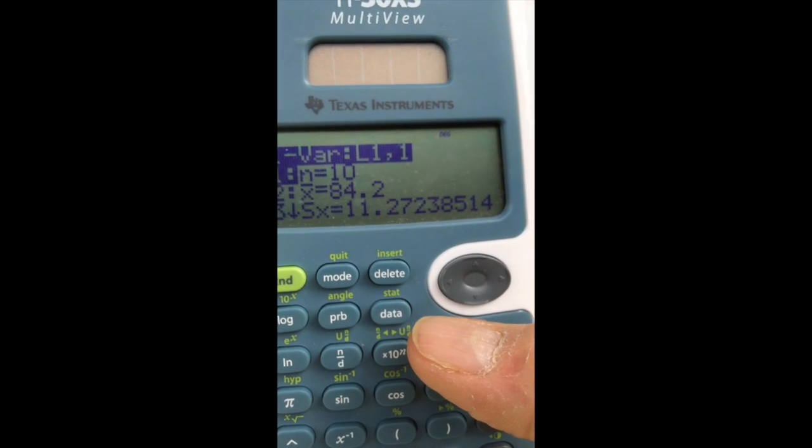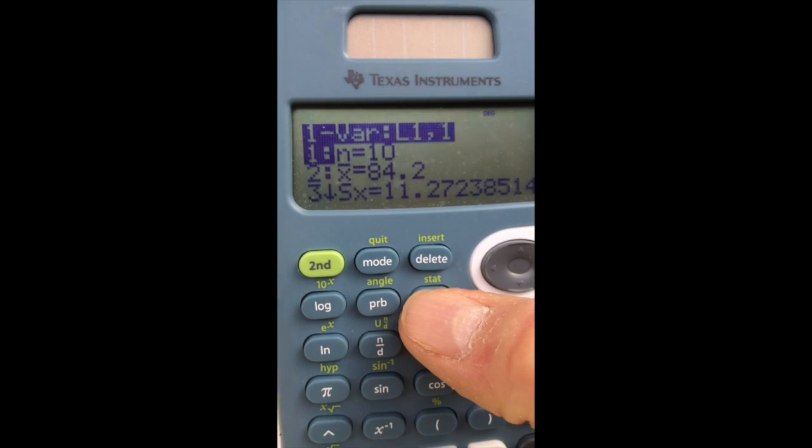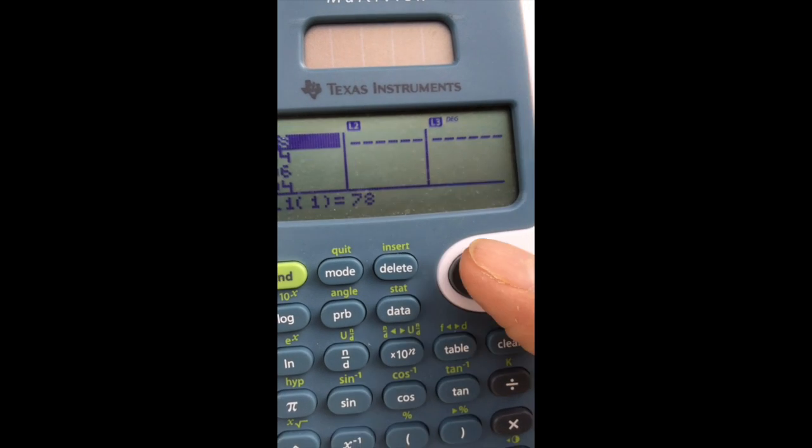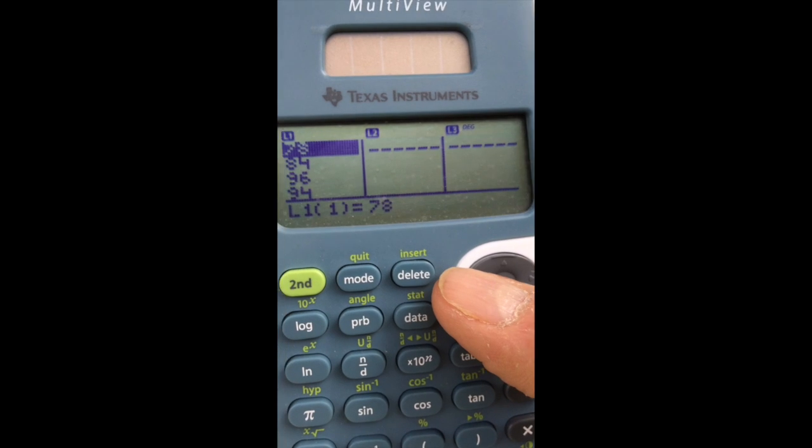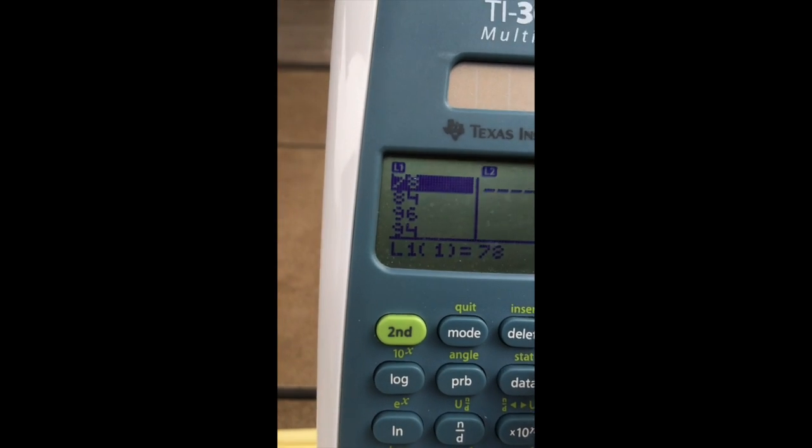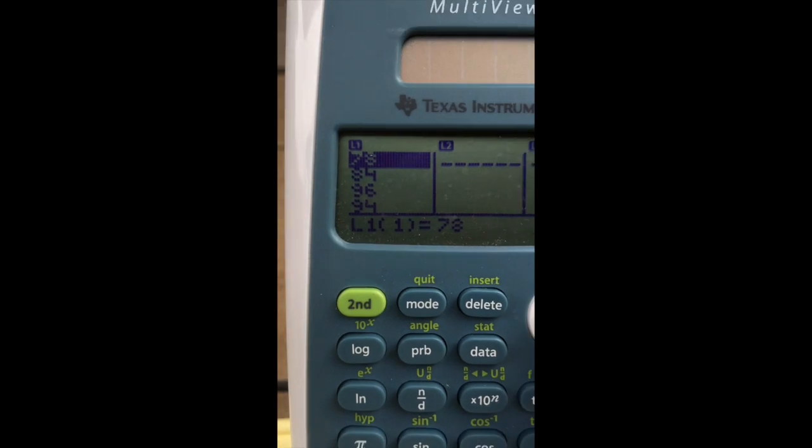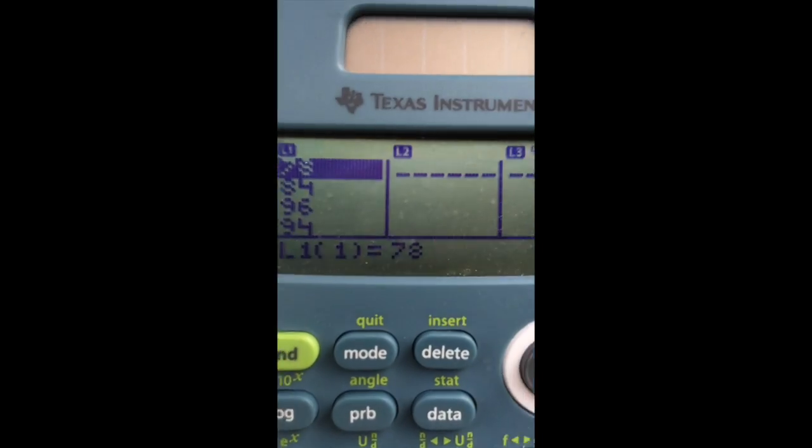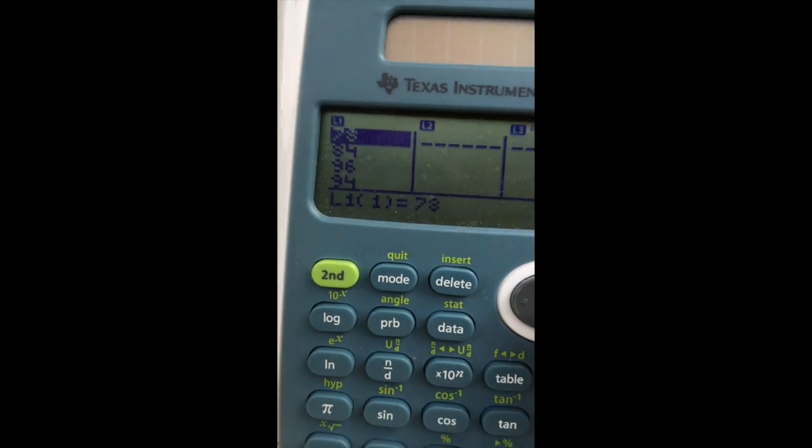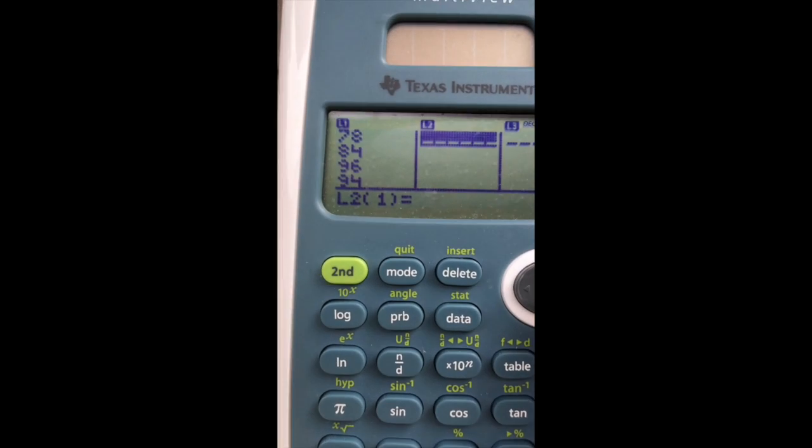Now, I am allowed, if I come back, you see, to data, I do have three columns of data before I have to erase. Now, let's suppose I had group data. Let's suppose I had frequencies. I'm going to put the frequencies in column two.